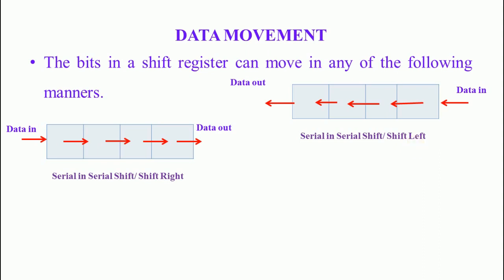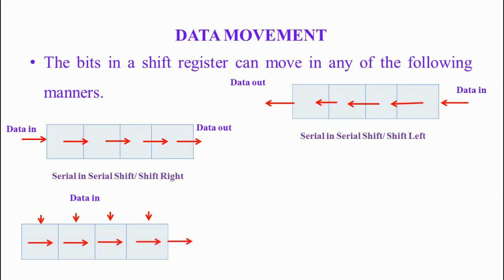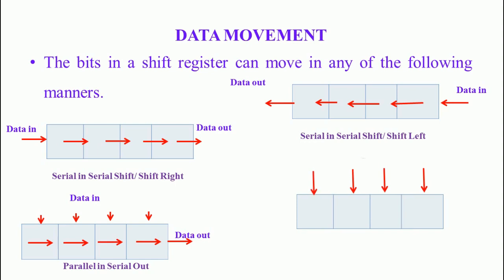In the next example, data is loaded in a parallel manner. Upon applying the clock pulse, the data is shifted out serially, with the output on the right-hand side. This shift register is called a parallel in serial out shift register. In the final example, data is loaded in parallel, and upon applying the clock pulse, the data is also shifted out in a parallel manner. This type is called a parallel in parallel out shift register.